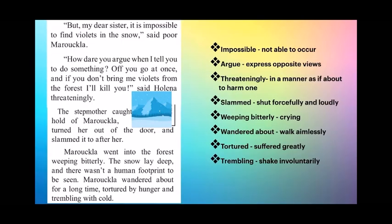Marukkala said: 'But my dear sister, it is impossible to find violets in the snow.' Holina replied: 'How dare you argue! Off you go at once, and if you don't bring me violets from the forest, I'll kill you,' said Holina threateningly. The stepmother caught hold of Marukkala, turned her out of the door, and slammed it after her. Marukkala went into the forest weeping bitterly. The snow lay deep and there wasn't a human footprint to be seen. Marukkala wandered about for a long time, tortured by hunger and trembling with cold. Meanings: impossible — not able to occur; argue — express opposite views; threateningly — in a manner as if about to harm one; slammed — shut forcefully and loudly; weeping bitterly — crying; wandered about — walked aimlessly; tortured — suffered greatly; trembling — shake involuntarily.